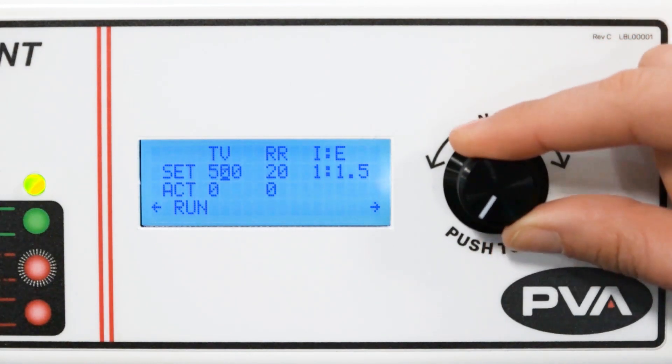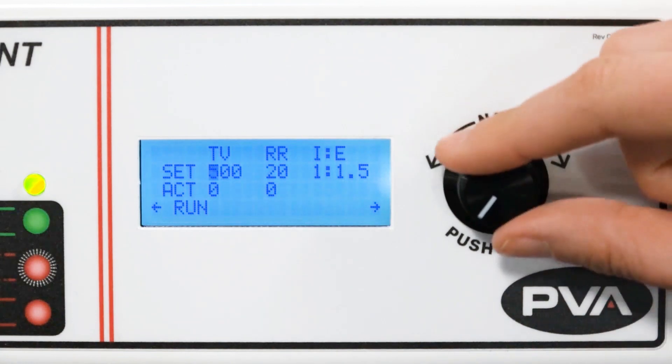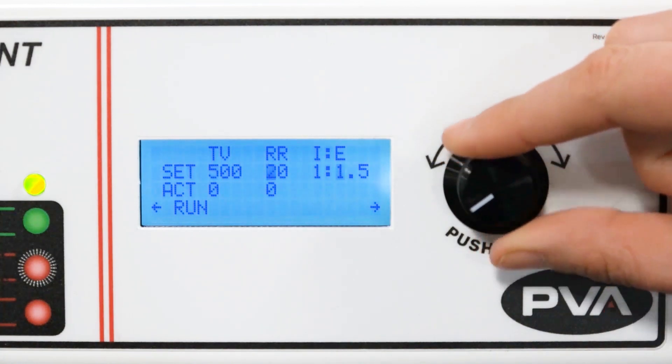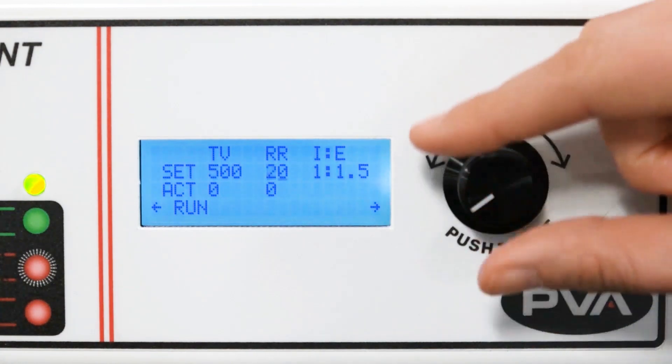To set a parameter, press the knob once, then scroll to the right or left to adjust the parameter. To set this, press the knob again.